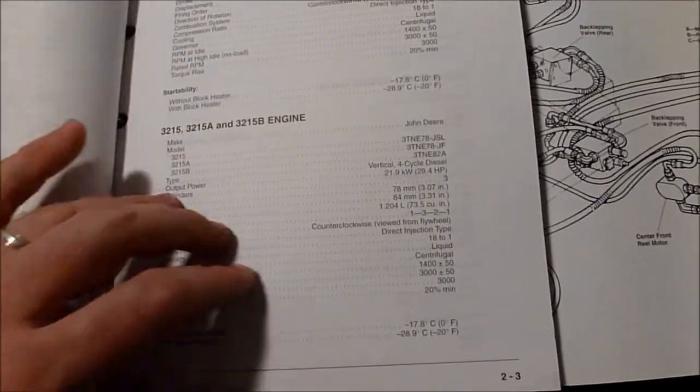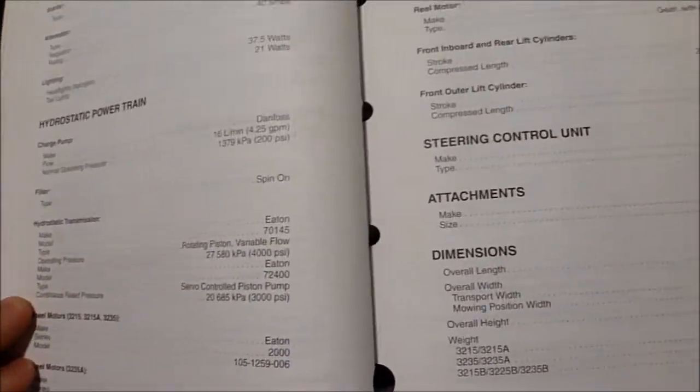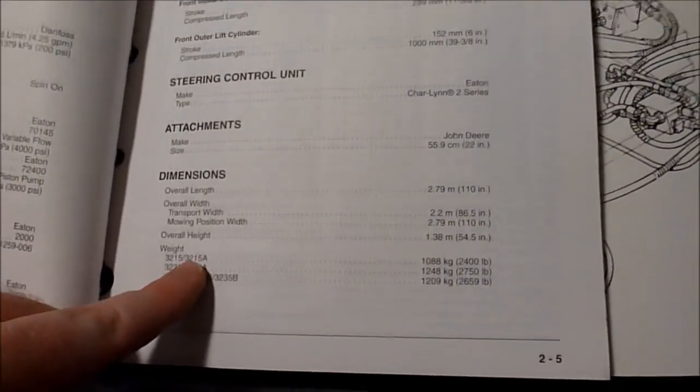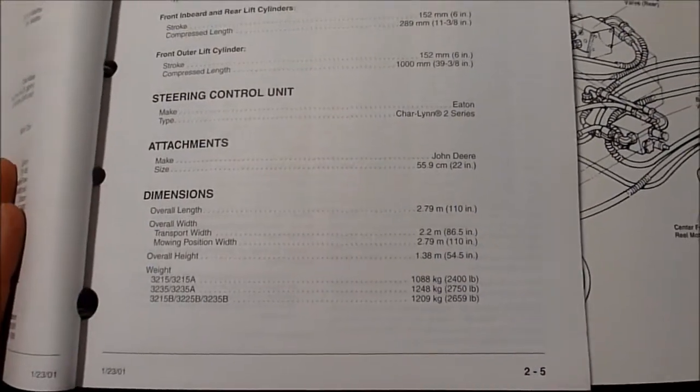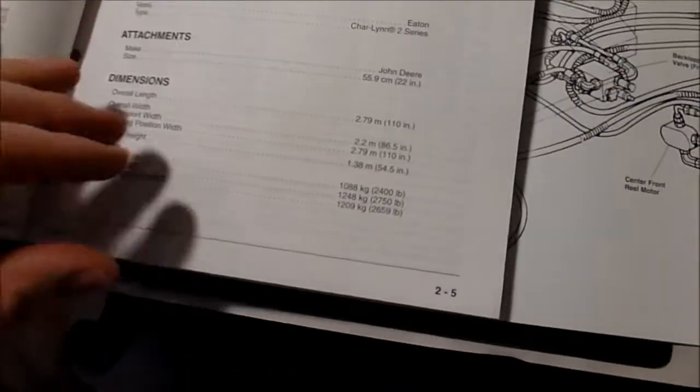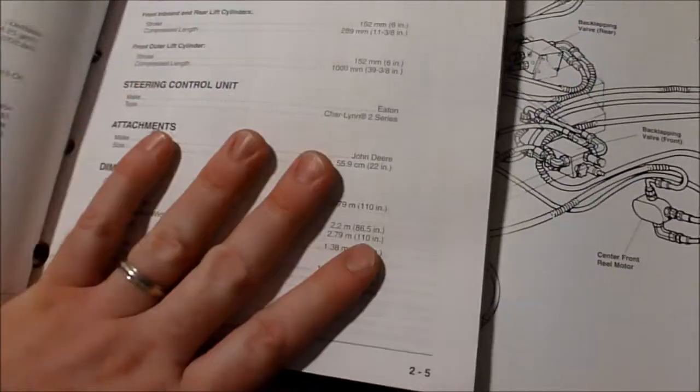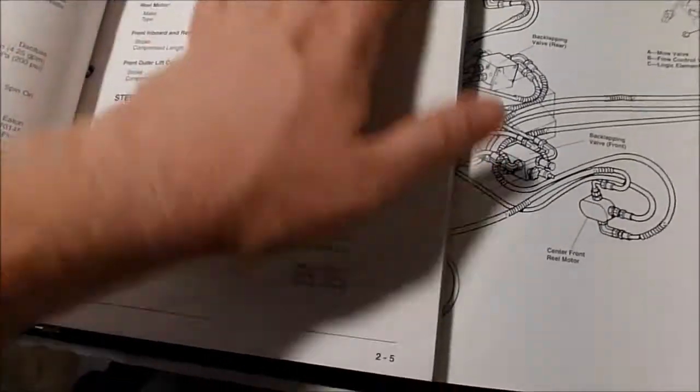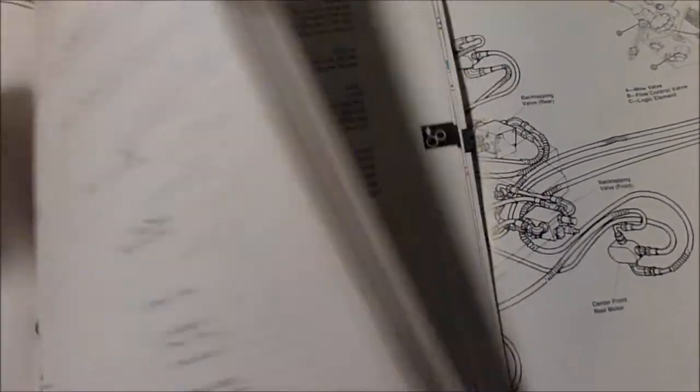Dimensional weight: the 3215 and 3215A was 2400 pounds, so a little over a ton for the whole machine. This technical manual actually covers the reel units, unlike some technical manuals that do not cover attachments.